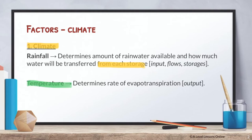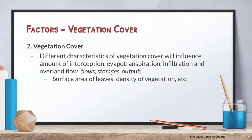Temperature determines the rate of evaporation and transpiration, so this part is referring to output. Both temperature and rainfall already overlap in that they affect every single part of the drainage basin hydrology — your input, output, flows, and storages — hence why climate is the most important factor overall.